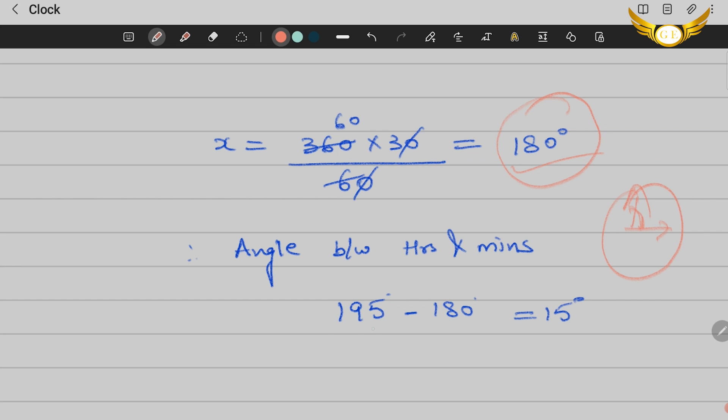To find the angle between the hour needle and minute needle, subtract: 195 degrees minus 180 equals 15 degrees. That is your answer. I hope you understood the solution.